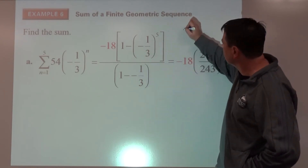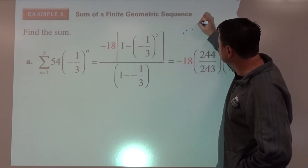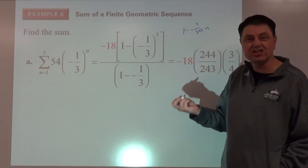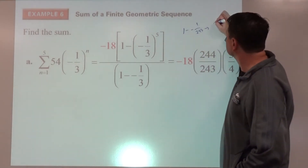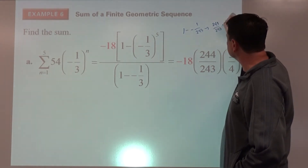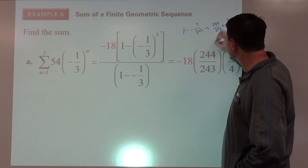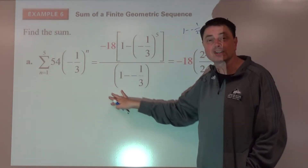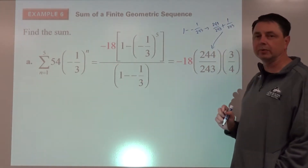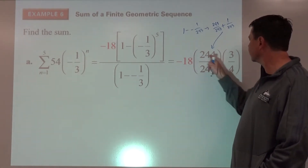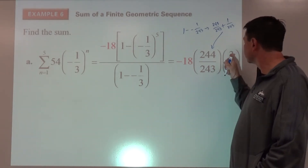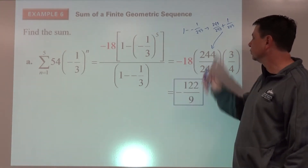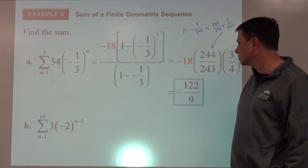This turns into one minus negative one over 243, which becomes 243 over 243 plus one over 243, giving 244 over 243. Then multiply negative 18 by that, and instead of dividing by four-thirds, multiply by the reciprocal. Four evenly divides into 244, and three divides into 243. Fully reduced, the answer is negative 122 over 9.